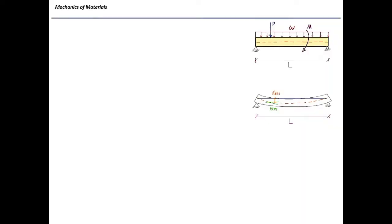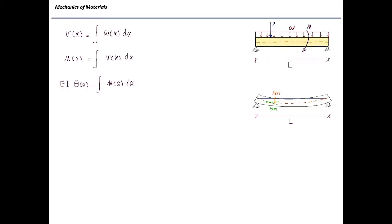Consider a very general case of beam deflections. A beam is subjected to different types of loading and we want to determine how much deformation occurs. In the shear and moment diagrams, the loading and shear diagrams are related: shear force is the integral of loading. Similarly, the moment diagram is built by determining the area under the shear diagram — mathematically, moment is the integral of shear force. If we integrate one more time, we get the slope of the beam, where E (modulus of elasticity) multiplied by I (moment of inertia) times slope equals the integral of the moment diagram. Integrating once more gives the deformation, delta, which is the integral of the slope of the beam.